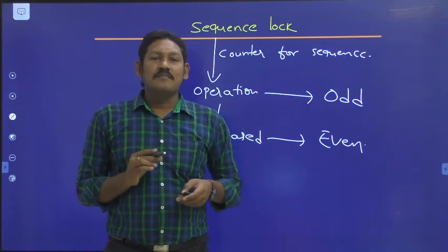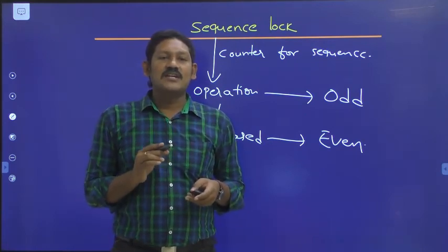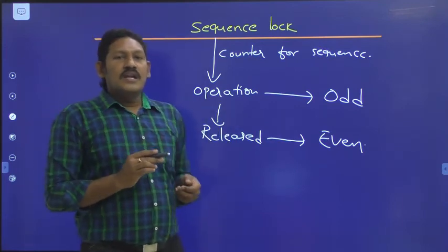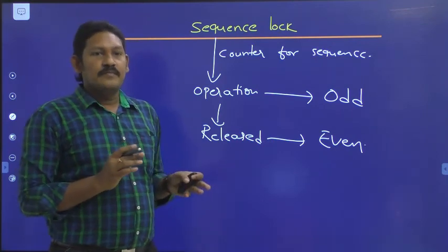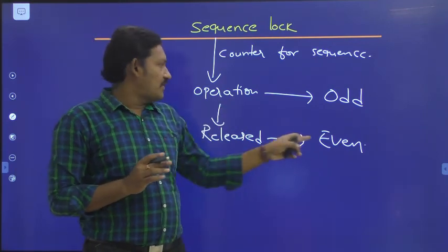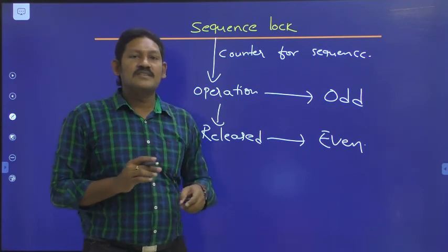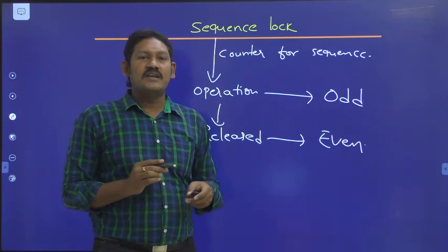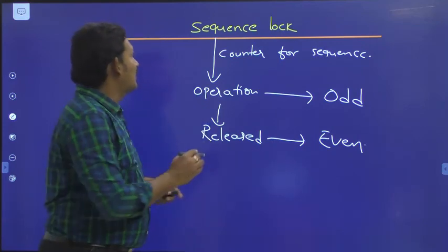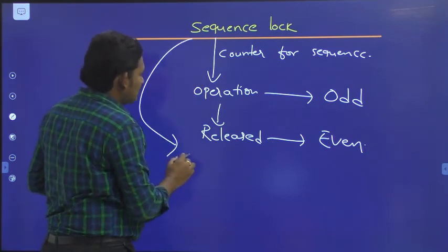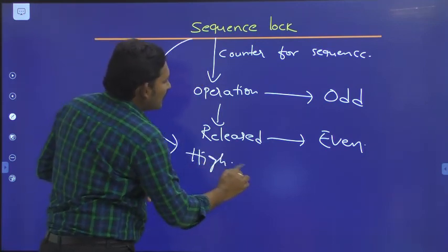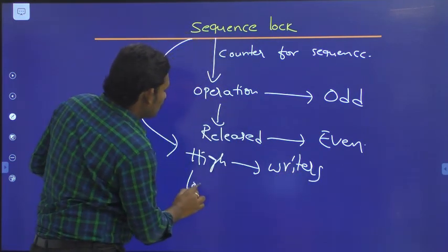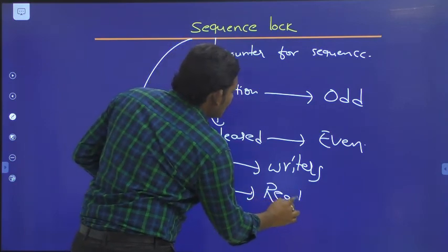If the counter values before and after reading are the same, it indicates that a write did not begin in the middle of the read. Additionally, if the counter value is even, a write operation is not being performed. Sequence lock gives high priority to writers and low priority to readers.